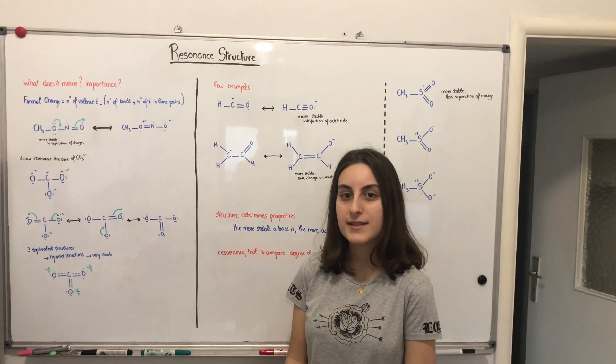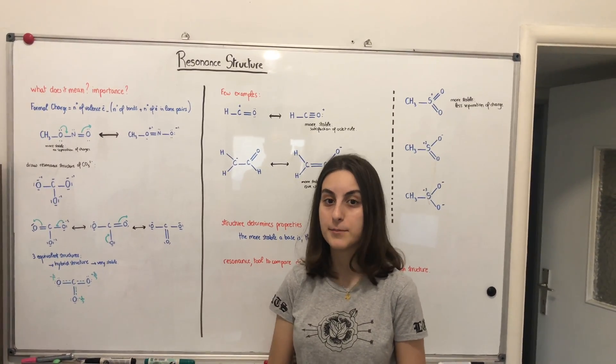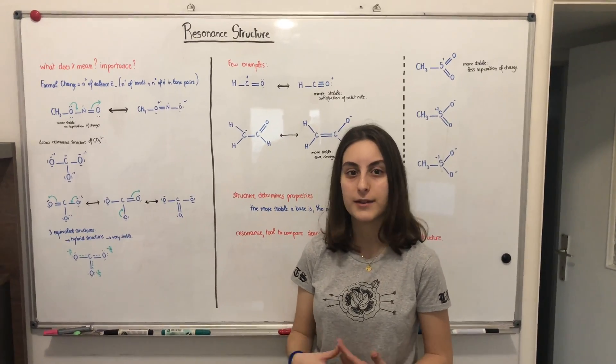Now, what does it mean? Resonance structures are different Lewis structures of the same compound. That means the position of the atom does not change. However, we can move around the electrons.